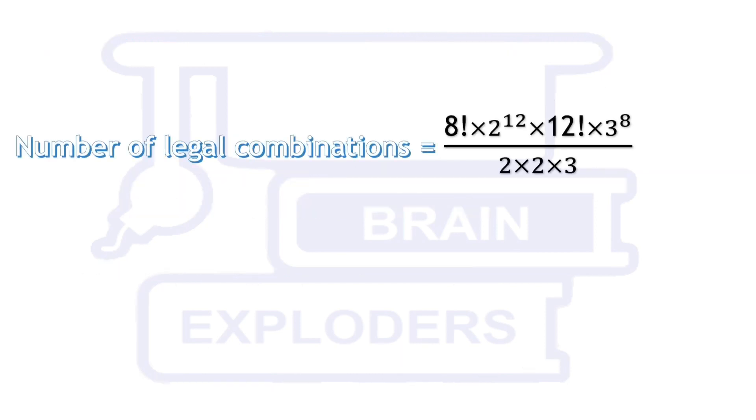Now the number of legal combinations is equal to 8! × 2^12 × 12! × 3^8 over 2 × 2 × 3, which is equal to 8! × 3^7 × 12! × 2^10.